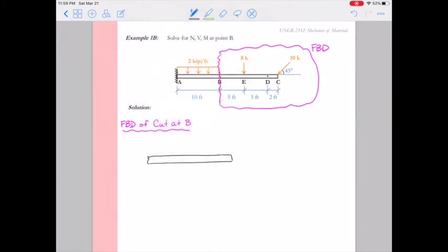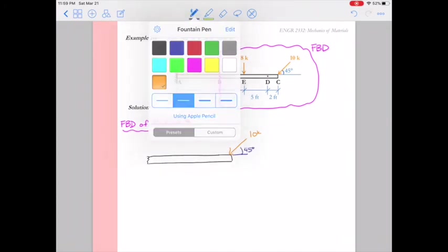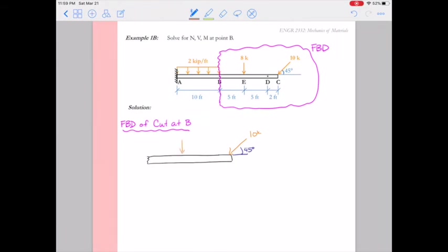We'll sketch the free body diagram of the beam that we see inside our circle. That beam contains the 10 kip force at point C again on the 45 degree angle. And then it also contains an 8 kip force at E, so we'll make sure we sketch that in. Then we have to get our forces at the cut. So at point B we sketch in our positive sign convention for axial force at B, shear at B, and moment at B. Lastly we add in our dimensions, and our free body diagram will be complete. That is 5 feet from point B to point E and then 7 feet from E to C.